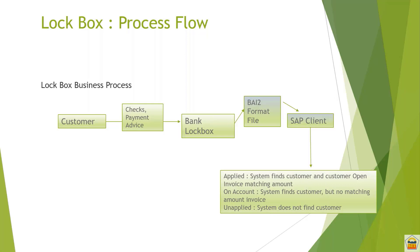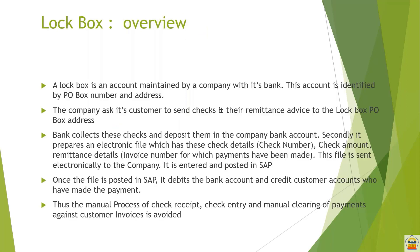We also have the status 'Unapplied', which means the system doesn't find any customer or any document number that could be matched with the open item. So these are the three statuses — Applied, On Account, and Unapplied — that we have when uploading a lockbox file. The lockbox account is maintained by the company with the bank and is identified by a PO Box number and address.